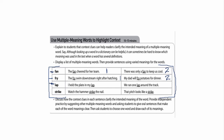The next word is lap — I held the plate in my lap, one meaning. And: we ran one lap around the track — a different meaning. And our last word is strike: watch the hammer strike the nail — one meaning. And: that pitch looks like a strike — a second meaning. With your child, discuss how context clues in each sentence clarify the intended meaning of the word, and have them explain how it is used in context and come up with another meaning of that same word.